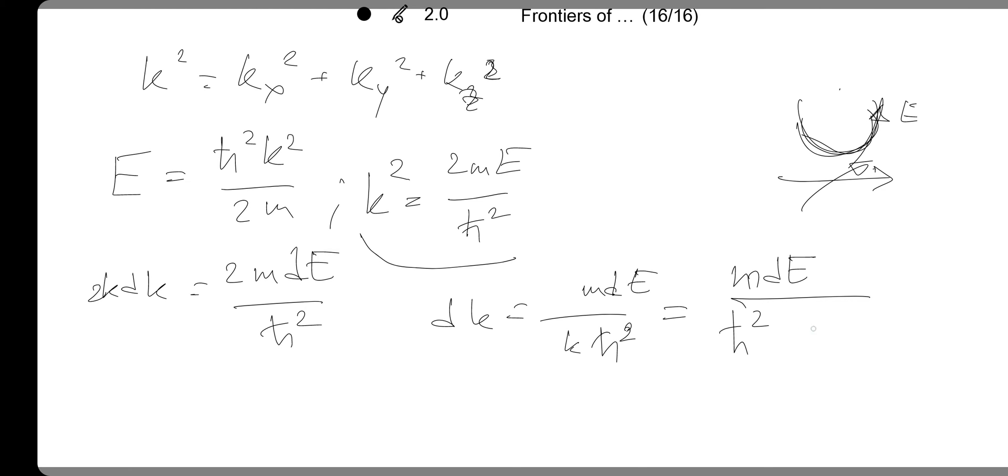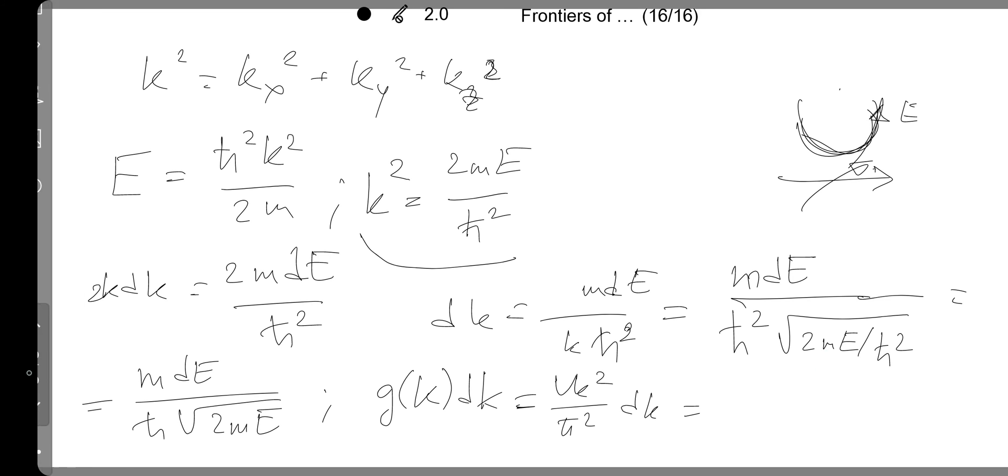You have now m dE over h-bar squared, and we can plug the value of k instead of k here, and that's the square root of 2m E over h-bar squared. Then if you take care of this h-bar squared bit here, you have m dE over h-bar times the square root of 2m E. Then finally g of k dk is V k squared over π squared dk, and we plug the value of dk.